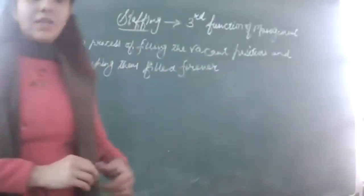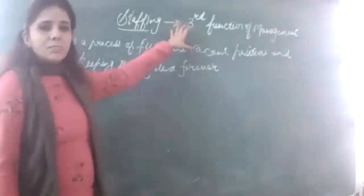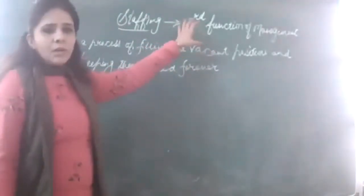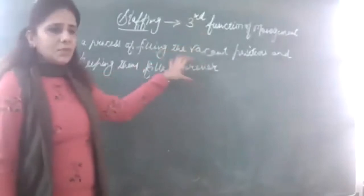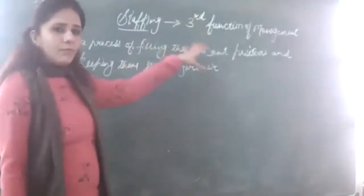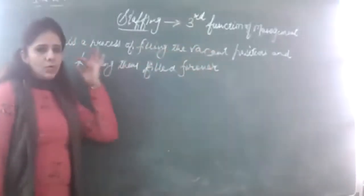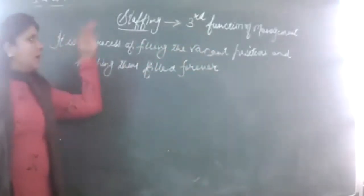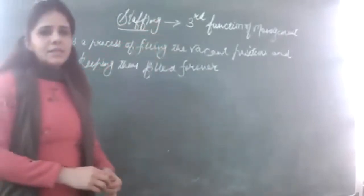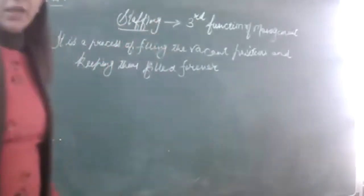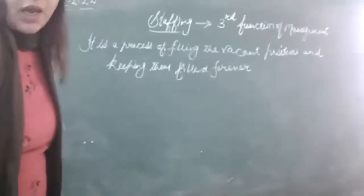Yesterday we had started the chapter. I just read up what we are going to do. Today we will be following the sequence of the NCR table. After planning and organizing, the next step the management has to perform is staffing — appointing staff.